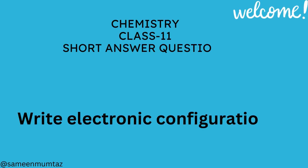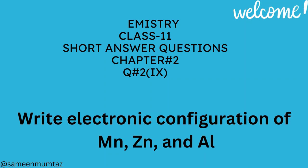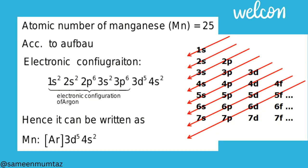Question number 2 part 9. Write electronic configuration of number 1, Manganese atomic number 25. 1s2 2s2 2p6 3s2 3p6 3d5 4s2, or argon plus 3d5 4s2.